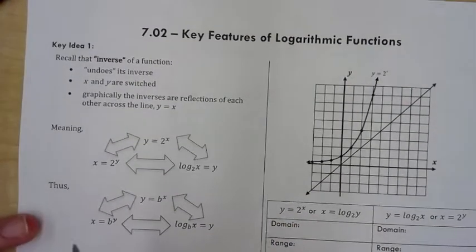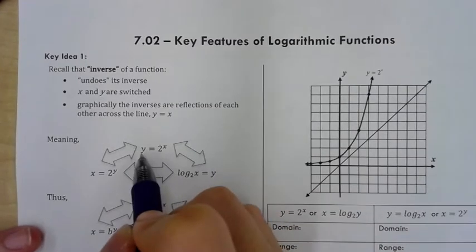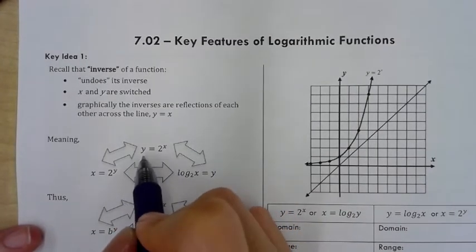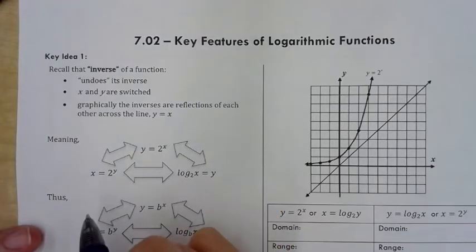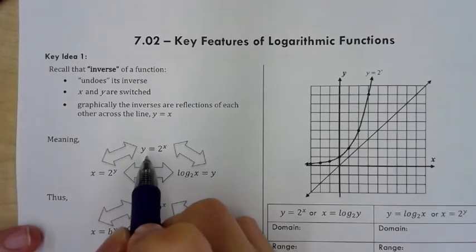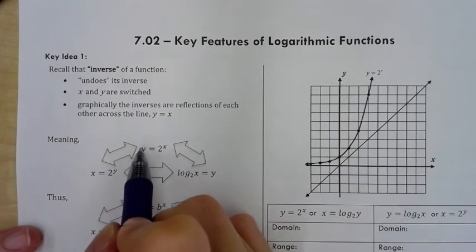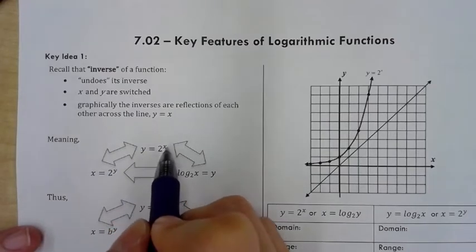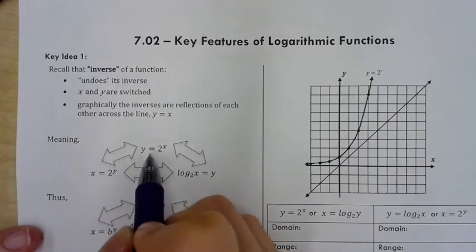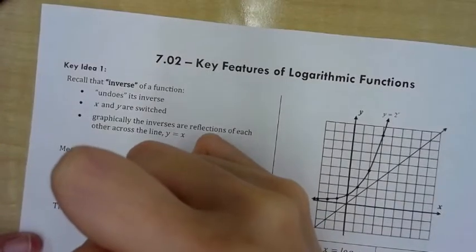In unit 6 we talked about exponential functions. Here is a basic form: y equals 2 to the x. If I were to find the inverse of this function, I simply switch x and y. So the relationship between these two functions is that they are inverses of each other.